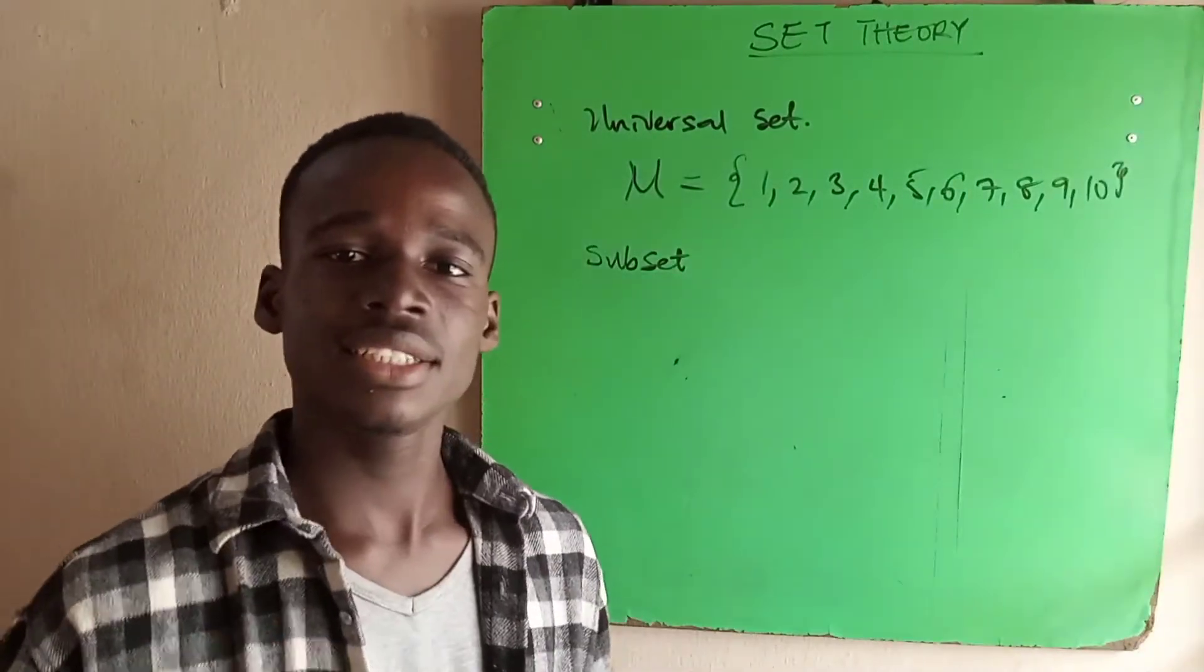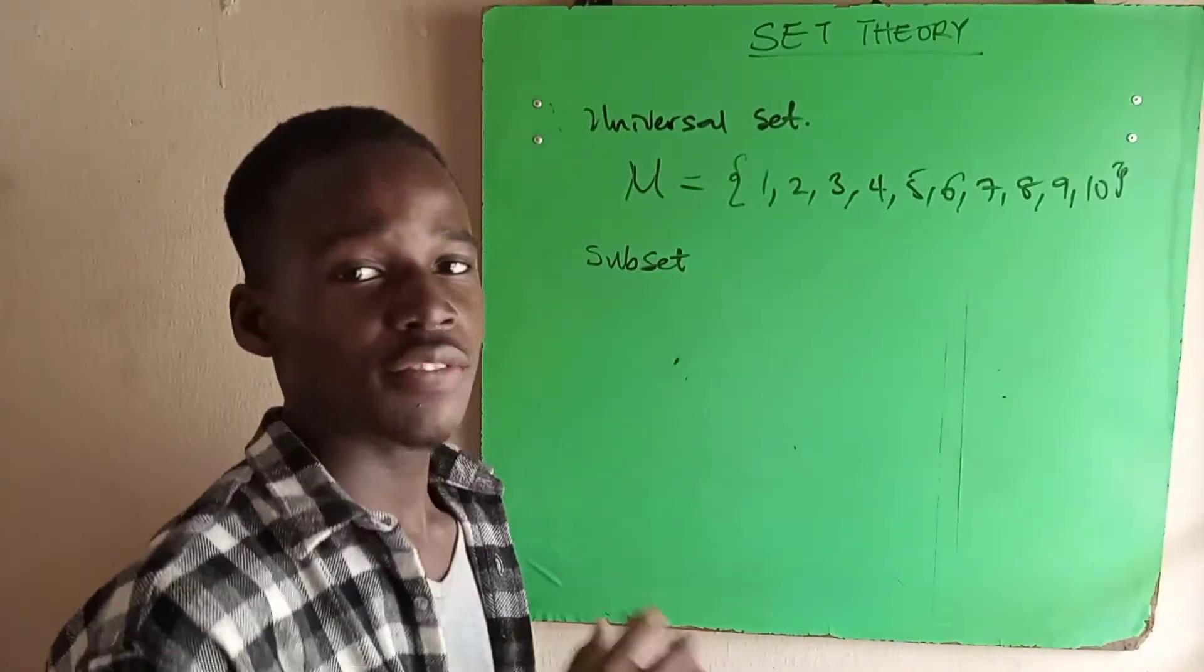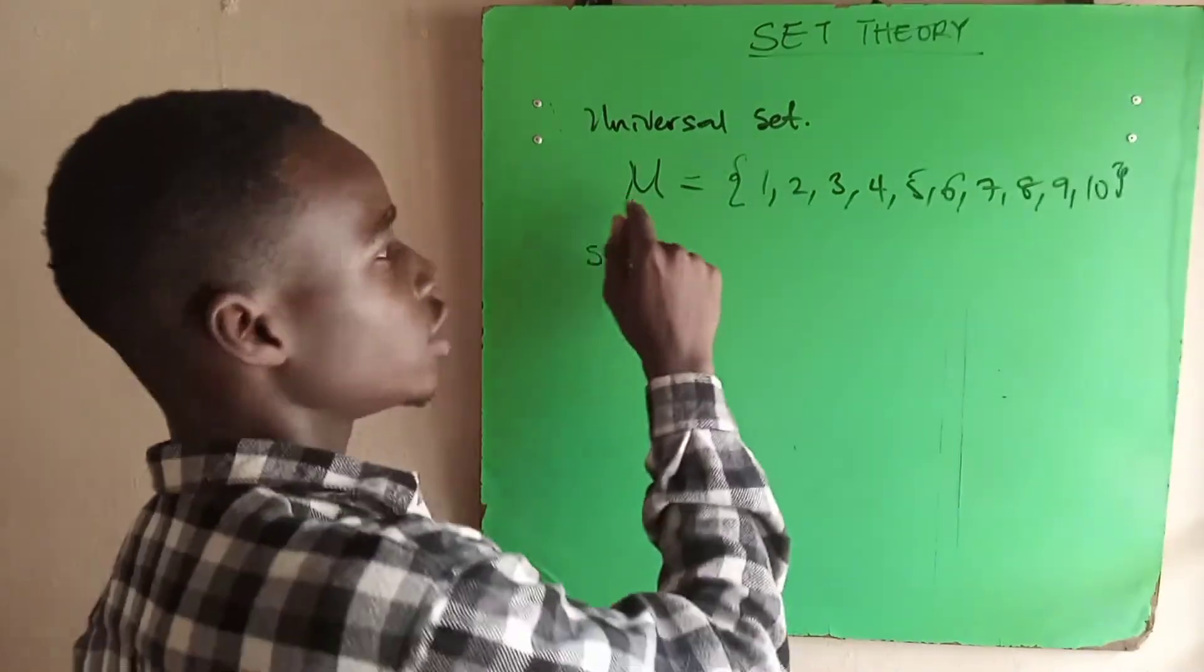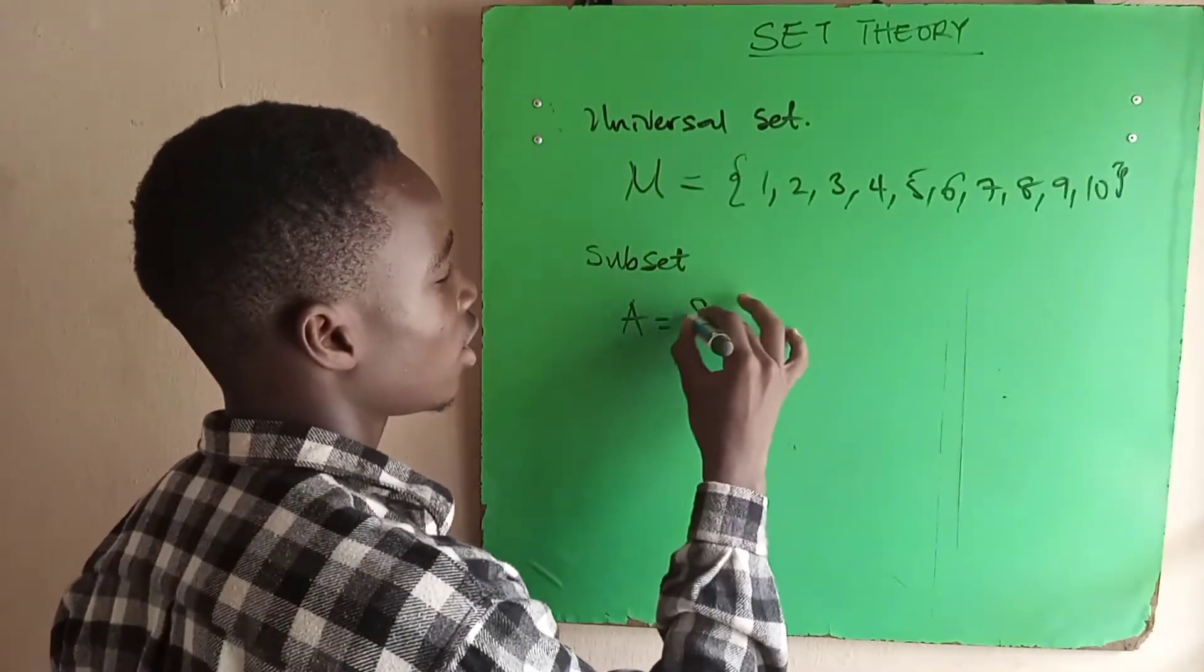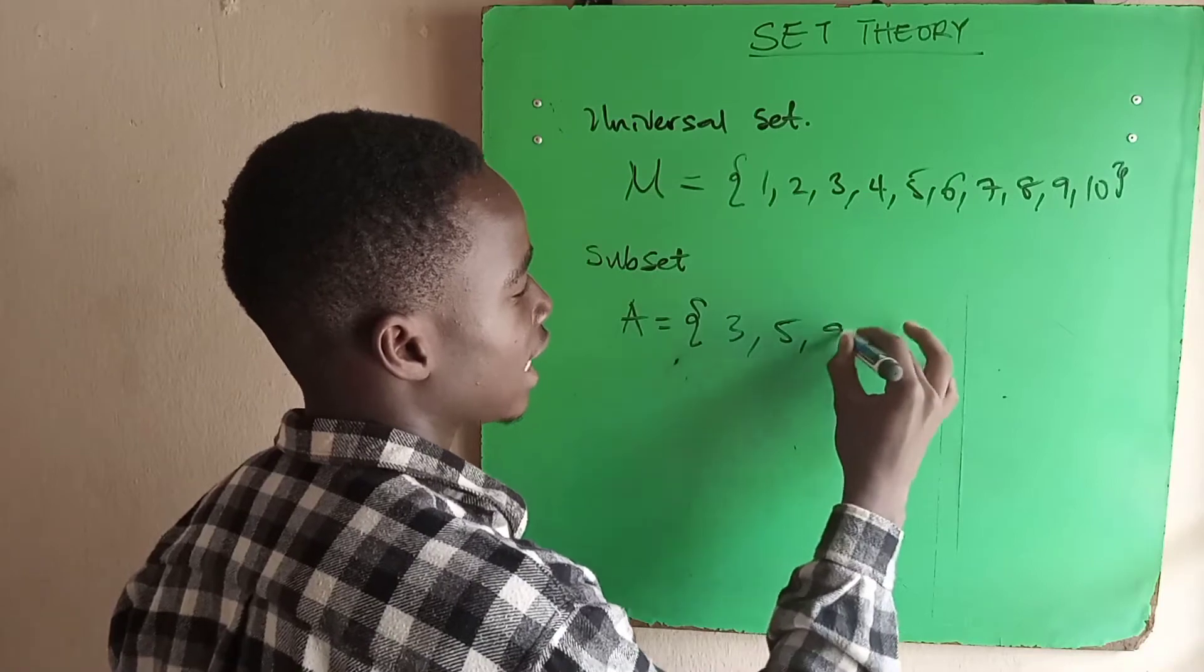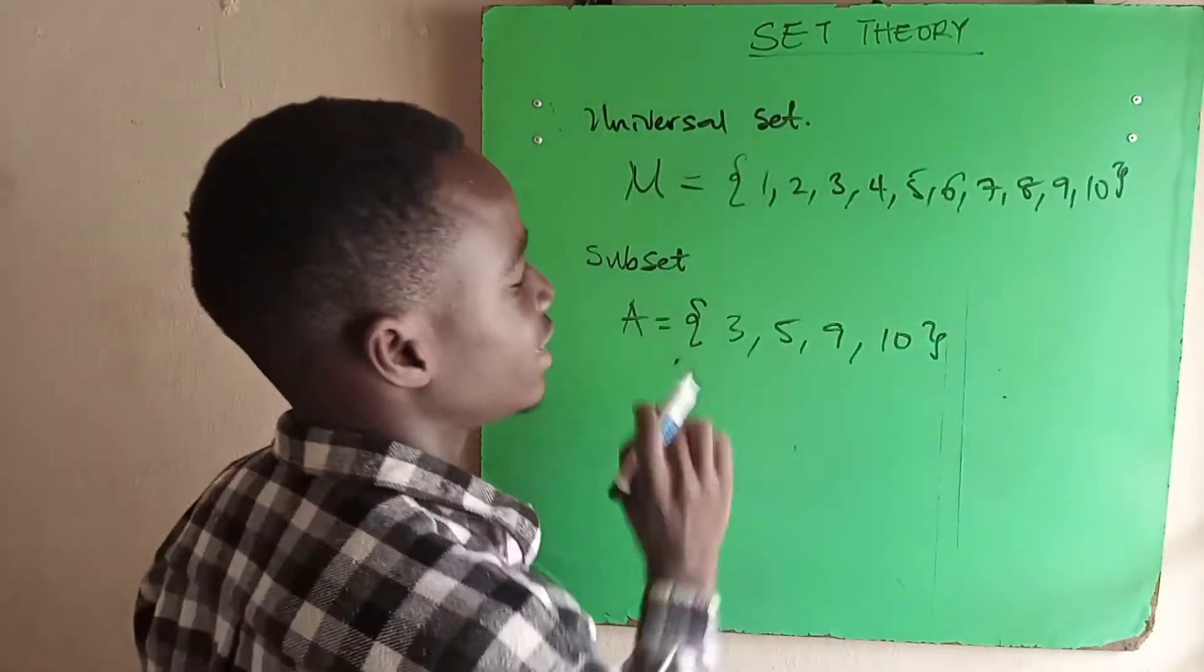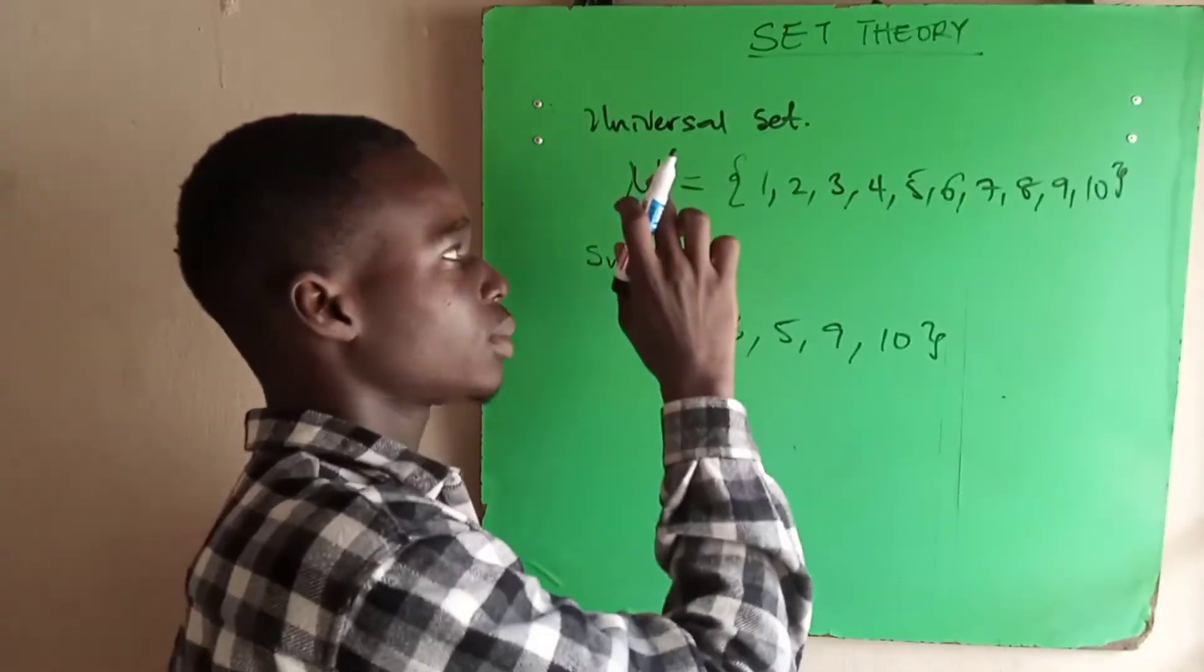Next, we move to subsets. This is a set gotten from the universal set. So if I pick some elements from this universal set and form a set with it, it becomes a subset. Let's say we have subset A with 3, 5, 9, 10. All the elements in set A are derived from the universal set, so we can say A is a subset of the universal set.